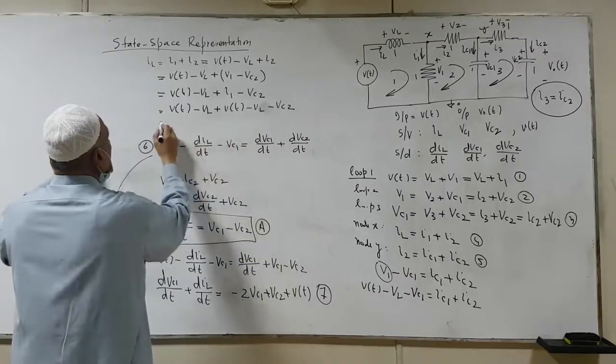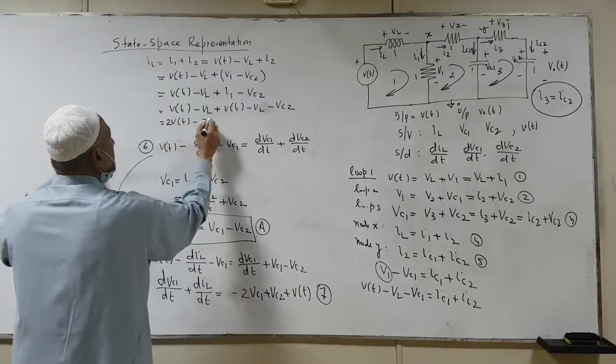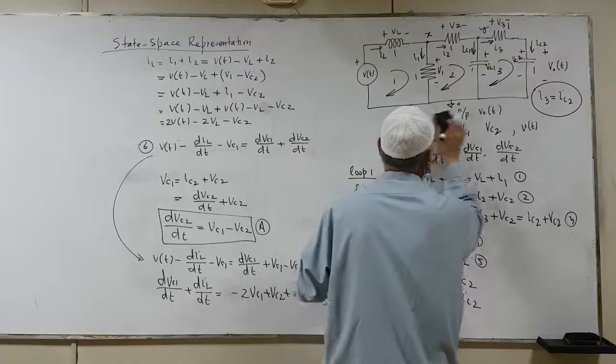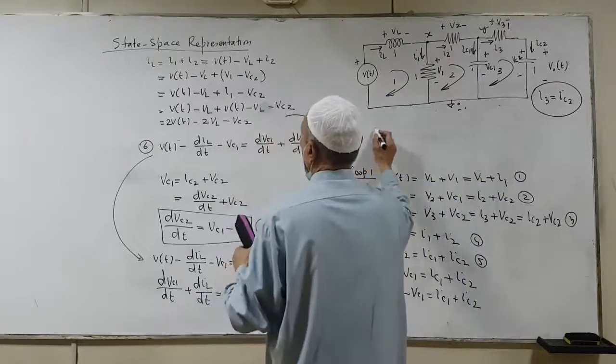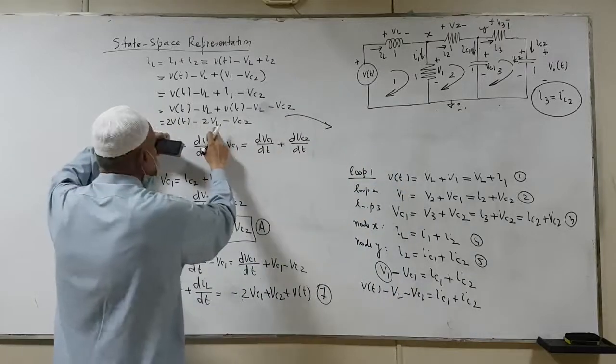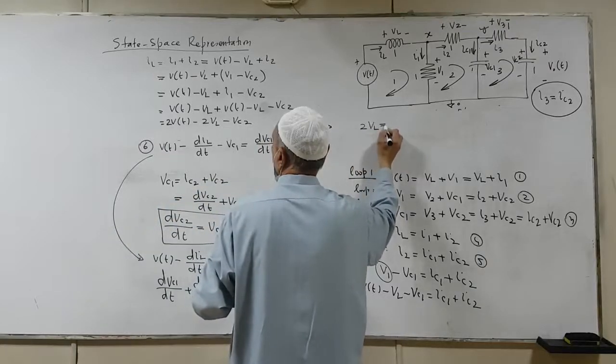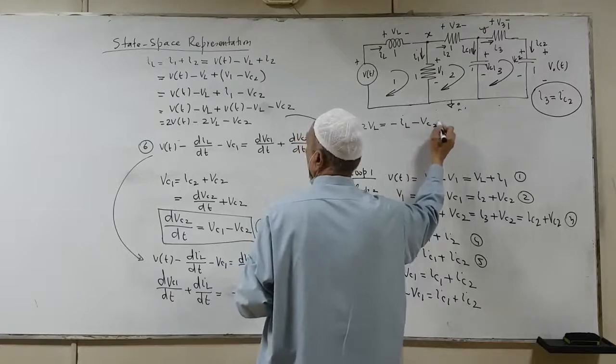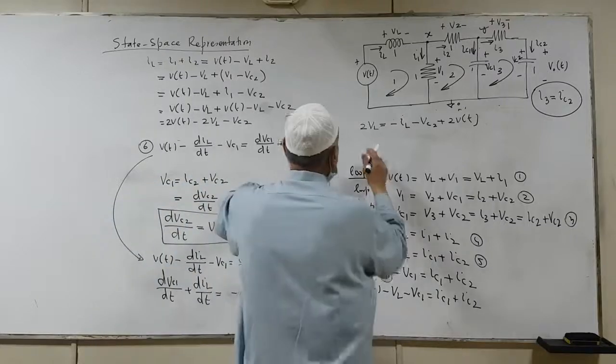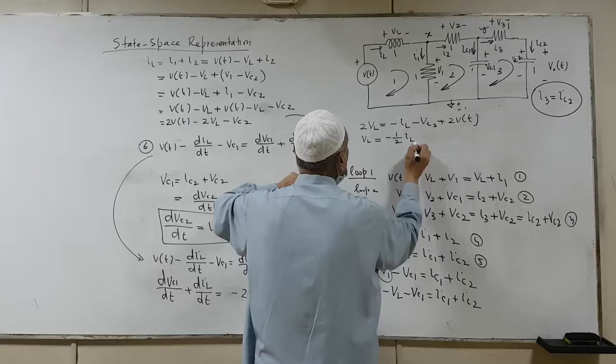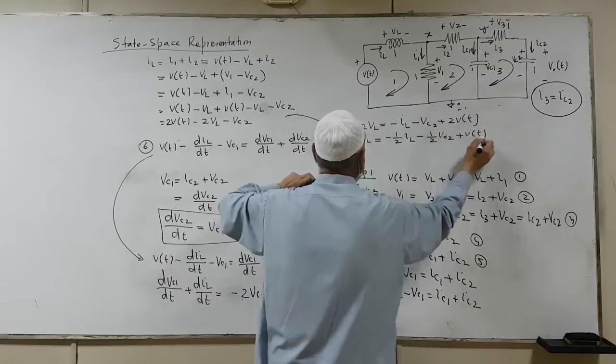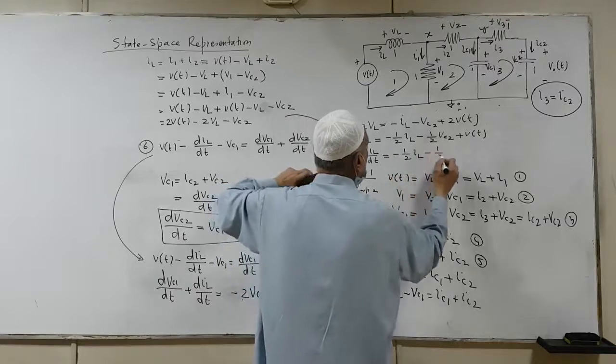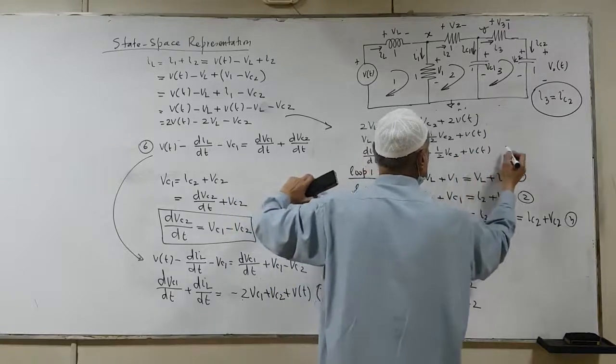Now, I have 2Vt minus 2Vl minus Vc2. So what I do actually is I have IL and Vl for which the derivative consists. So I will transform this on the other side and transform IL on this side. So we will have dVl, minus IL minus Vc2 plus 2Vt. Or, dVl is equal to minus 1 over 2 IL minus 1 over 2 Vc2 plus Vt. Now, this is equation B of course.